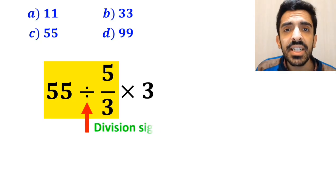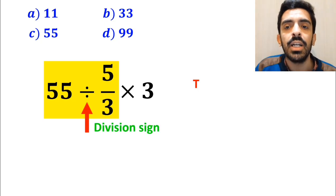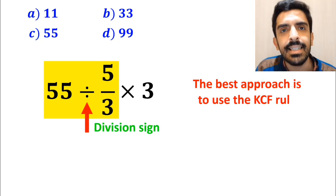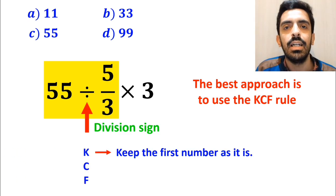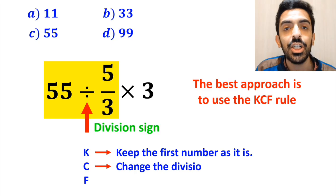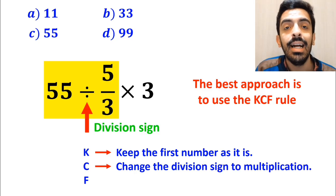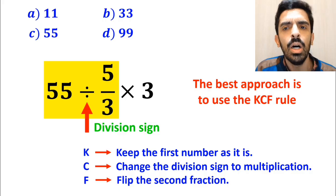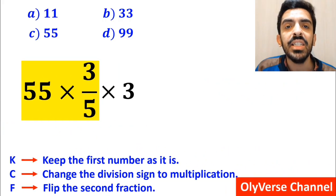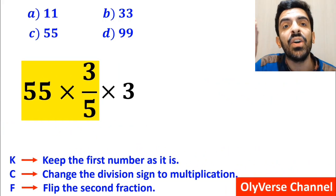Whenever we see a division sign between two terms, the best approach is to use the KCF rule. In this rule, K stands for keep the first number as it is, C stands for change the division sign to multiplication, and F stands for flip the second fraction. So, we remove the highlighted part and replace it with 55 multiplied by 3 over 5.